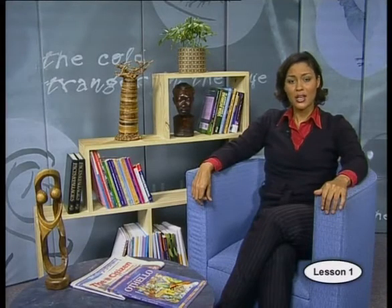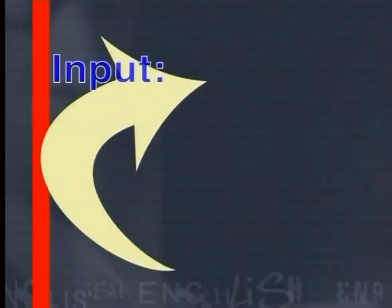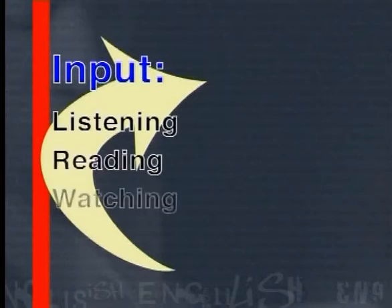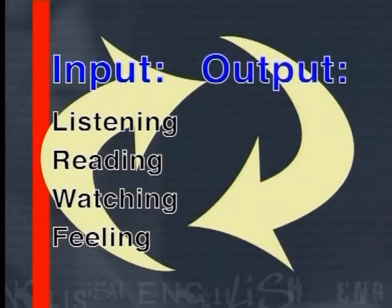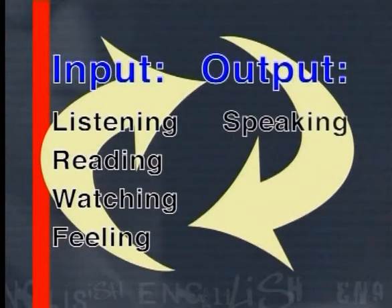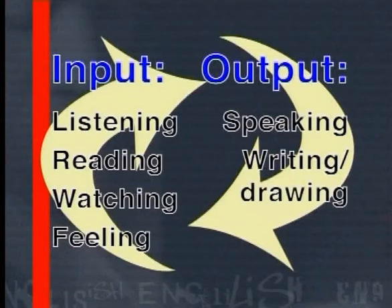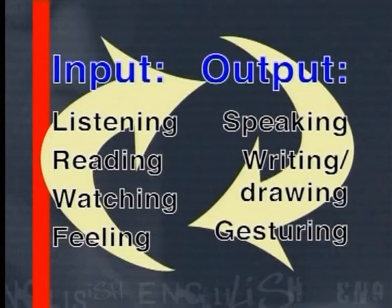It doesn't really matter what type of communication it is — one thing will always be the same: it will always depend on something that is going on in the world. In a way, you can think of communication as one big cycle. We are always in the process of getting information about the world by listening, reading, watching, feeling. And we are always in the process of creating more information by speaking, writing, drawing, gesturing. The cycle never stops.